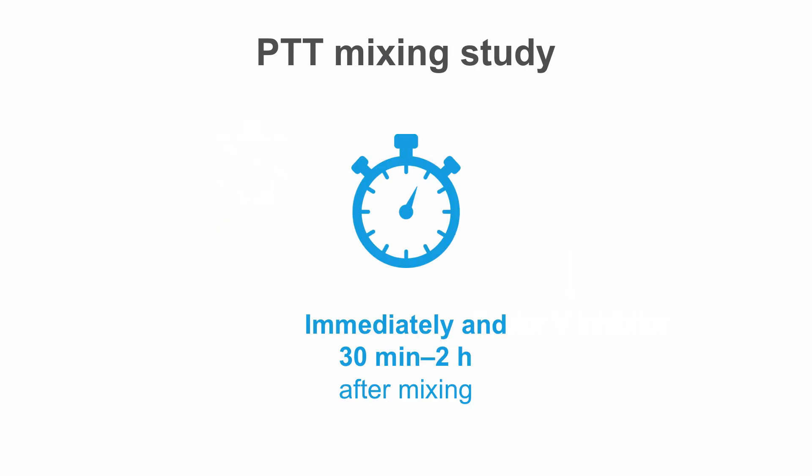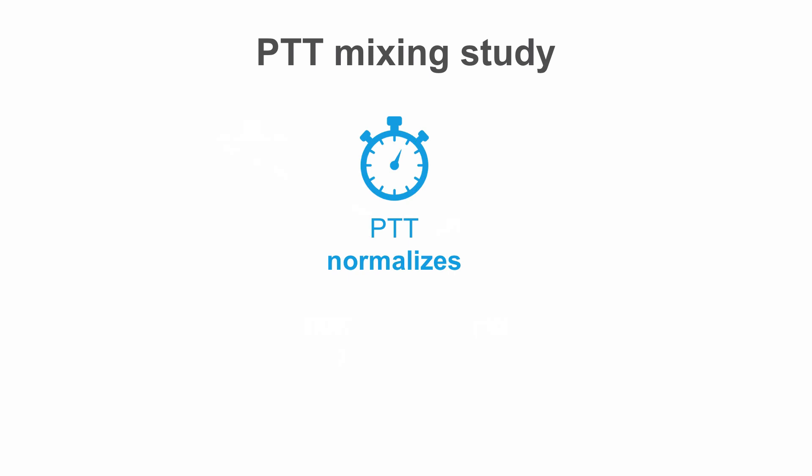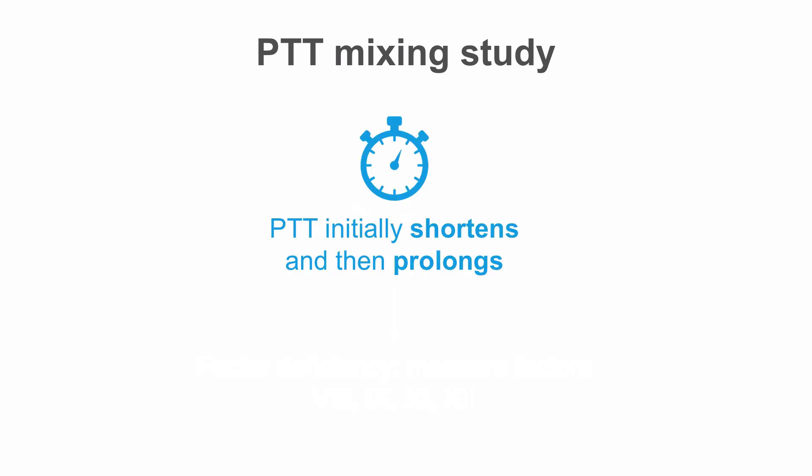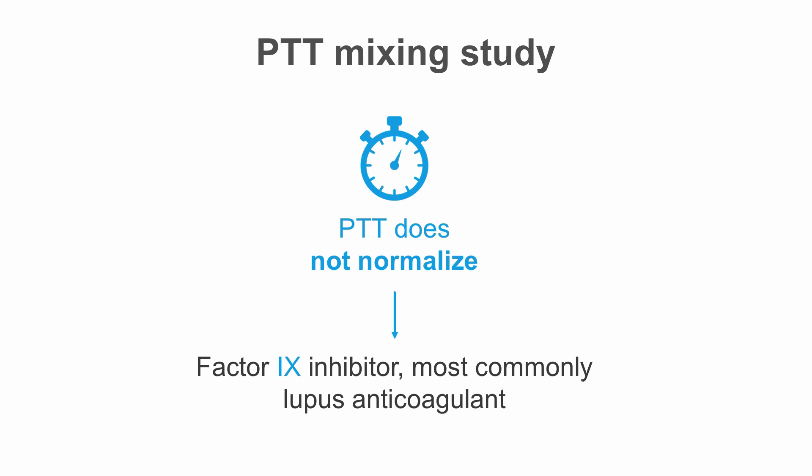Now moving on to the PTT mixing study. This is done when the PTT is prolonged, and just like the PT mixing study it is done twice — once immediately and the second time 30 minutes to 2 hours after mixing. If the PTT normalizes with mixing, then we are dealing with a factor deficiency and the factors involved may be factors 8, 9, 11, and 12. If the PTT initially shortens and then prolongs, then we are most likely dealing with a factor 8 inhibitor. If the PTT does not normalize, we may be dealing with a factor 9 inhibitor, or more commonly a lupus anticoagulant.